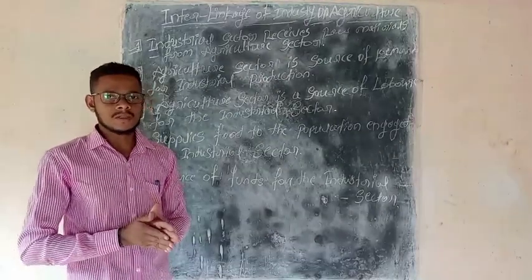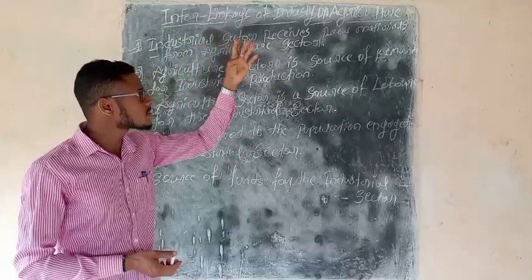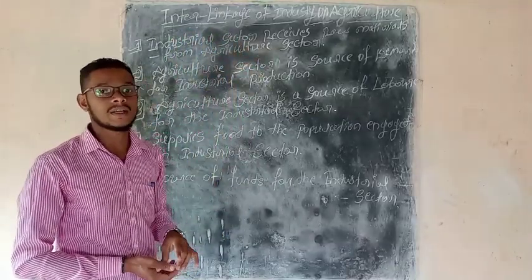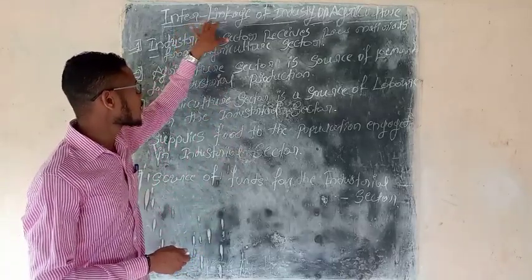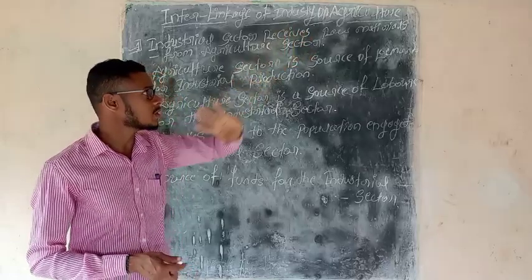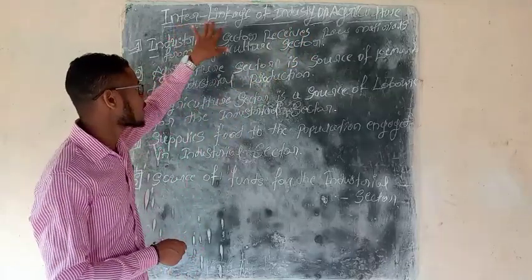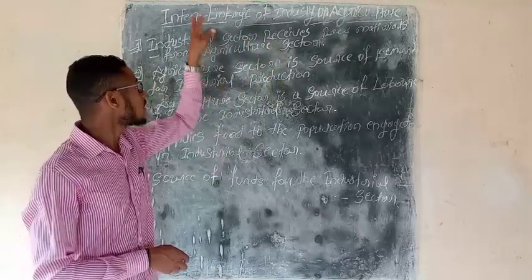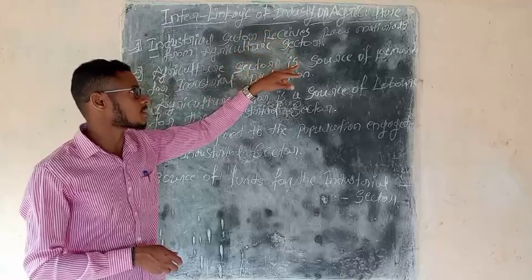Good morning students. Today we see the interlinkages of industry and agriculture. There are two types of interlinkages of industry and agriculture.